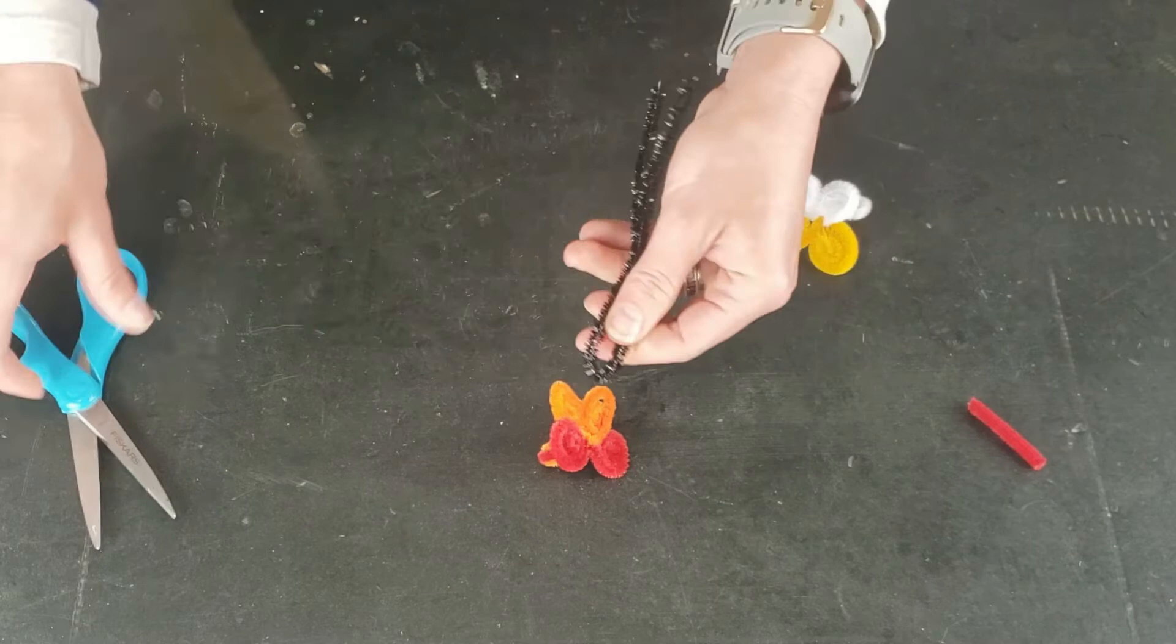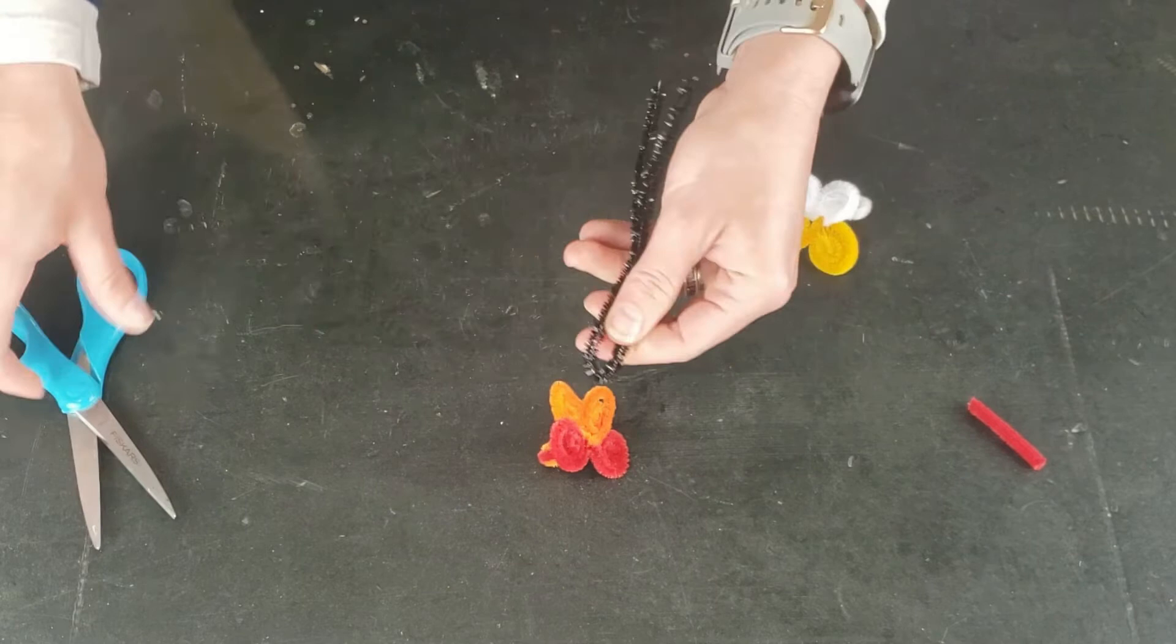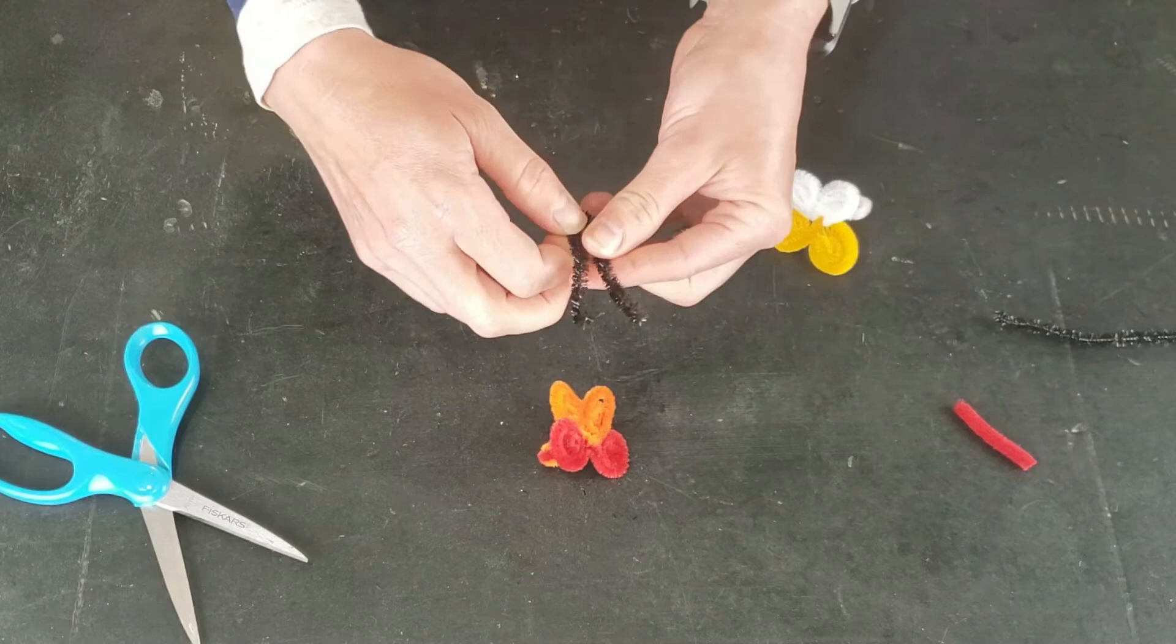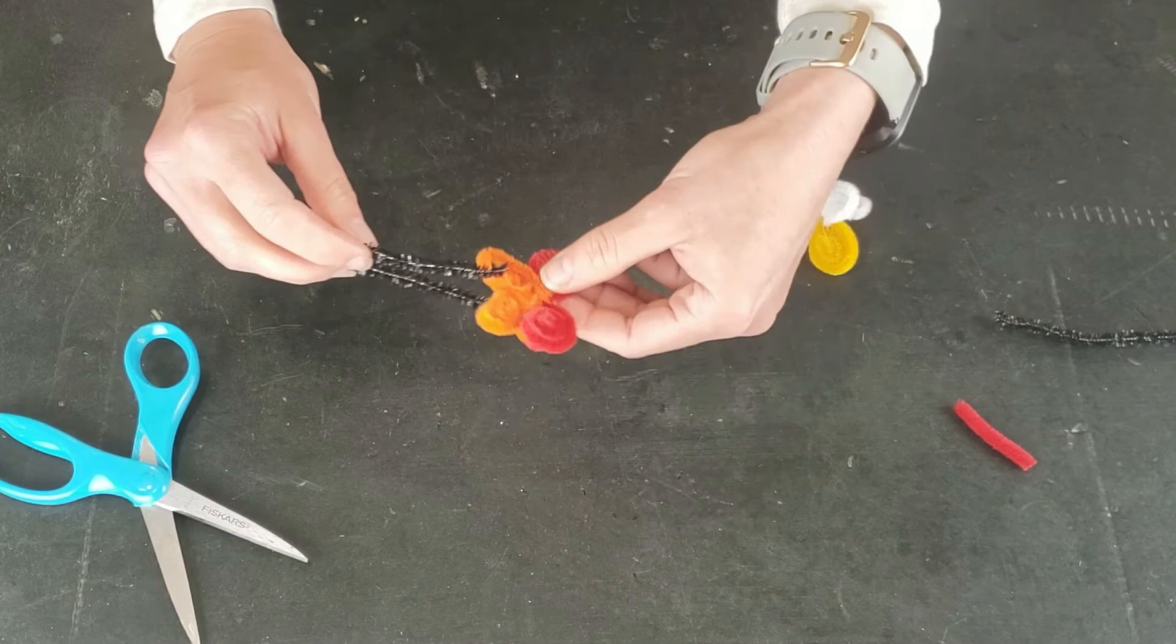So just fold the neutral colored pipe cleaner in half and then cut that off. And then we'll fold it in half again so we can find the center, and we will slip that center over our ring.